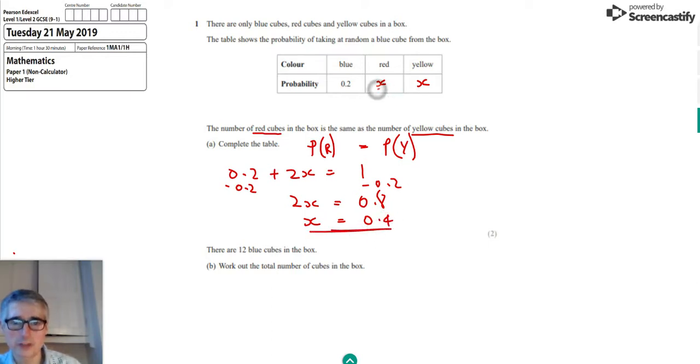So to complete the probability table there, we need to write in 0.4 and 0.4.